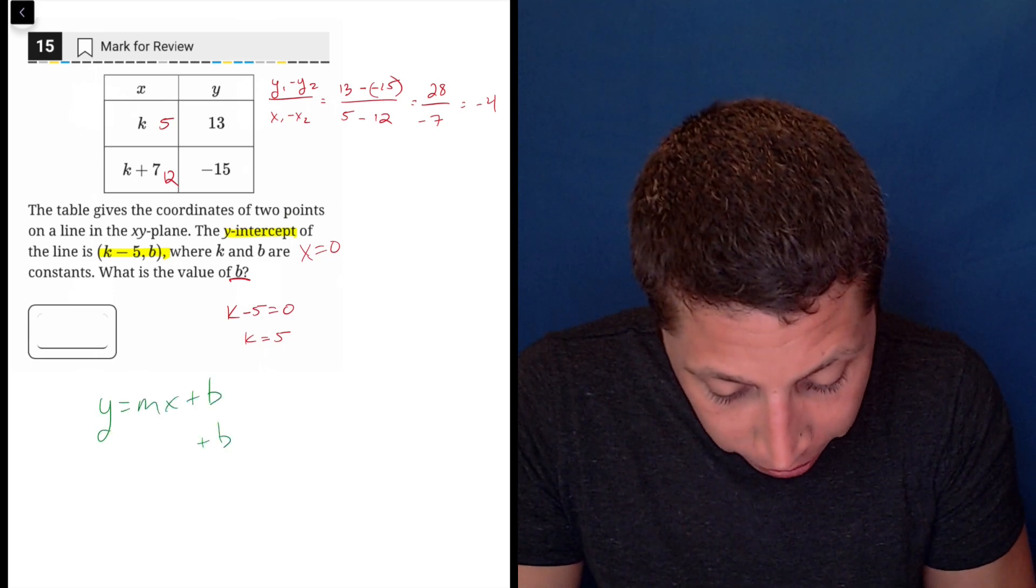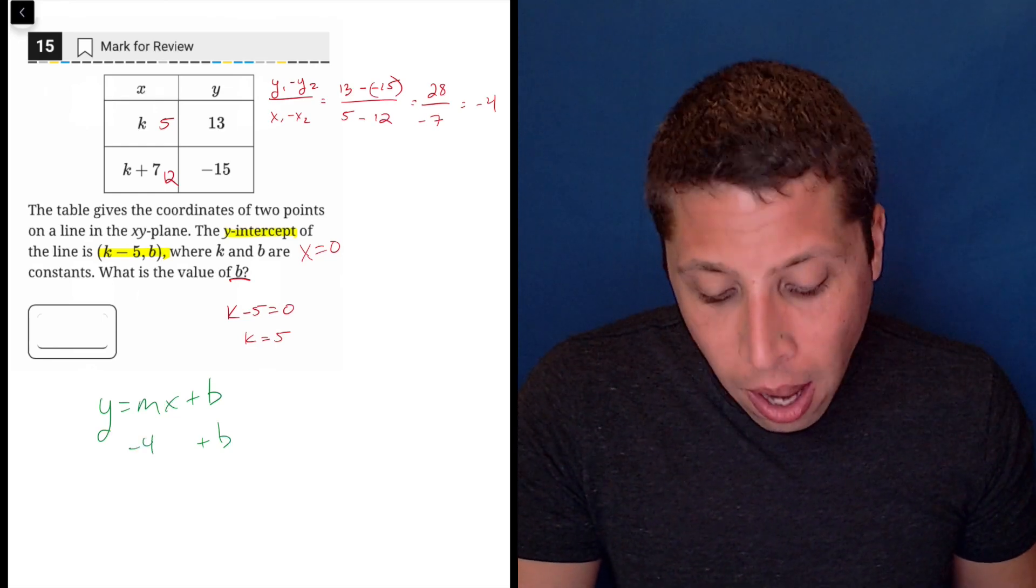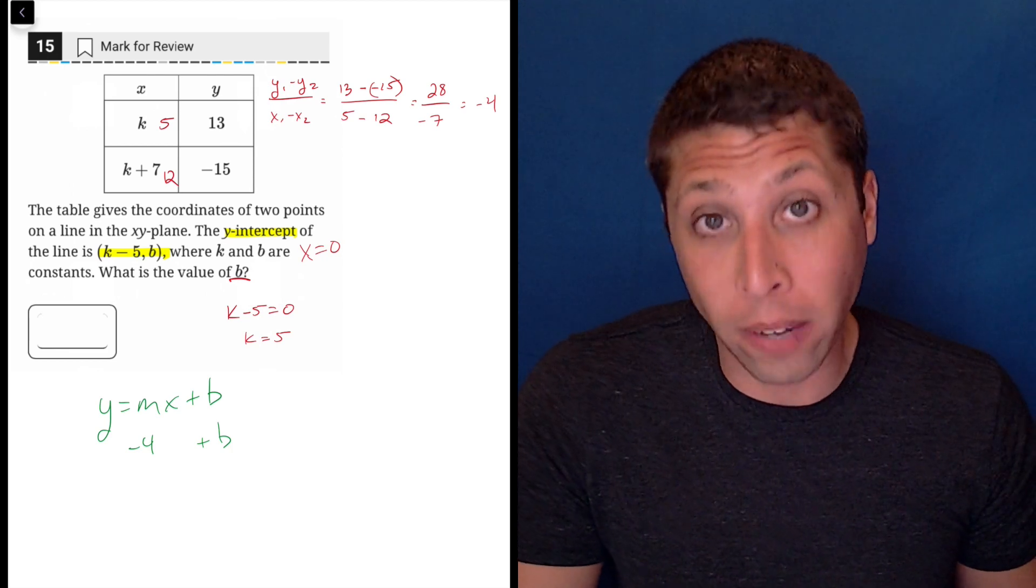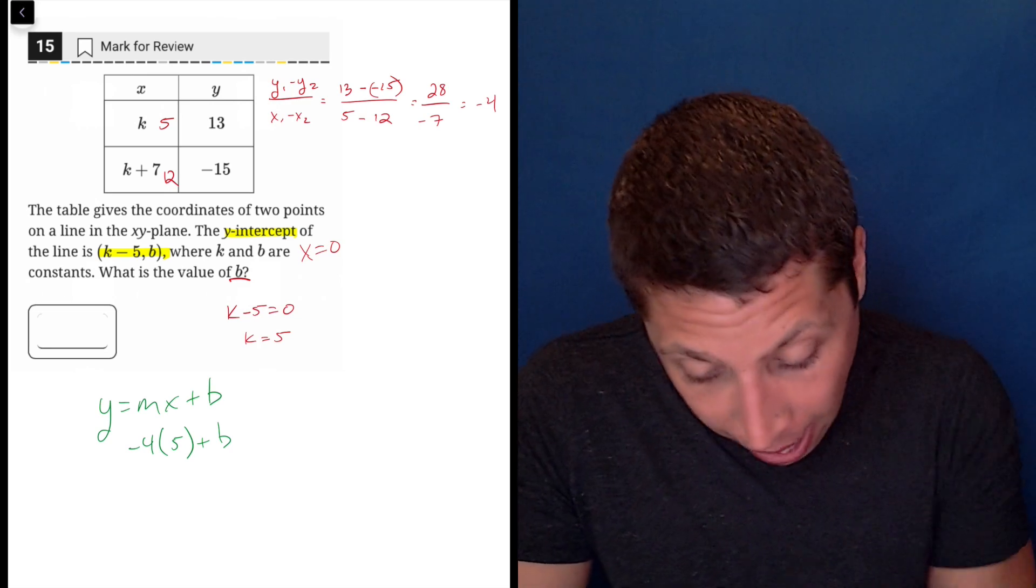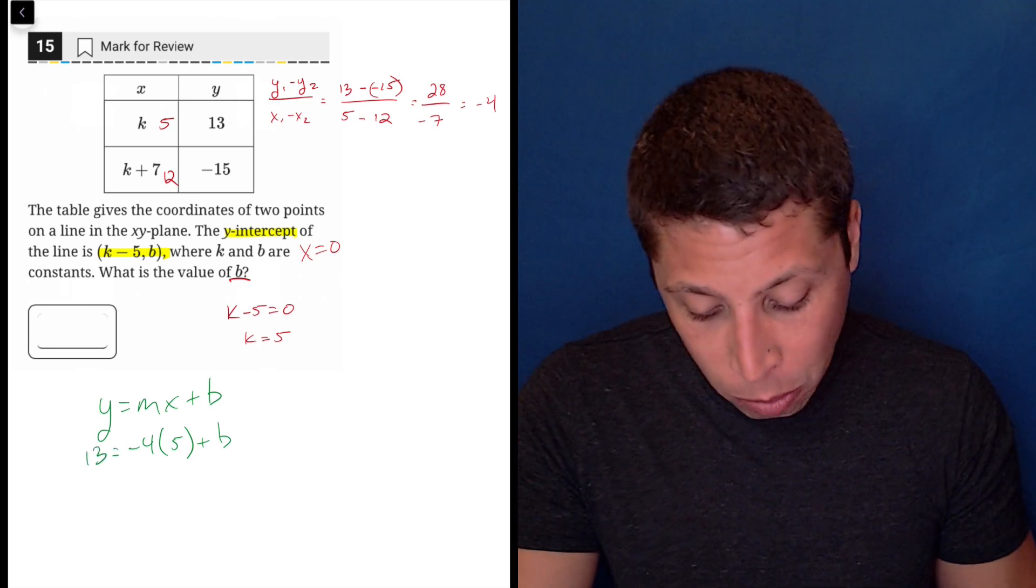I still don't know the b, that's what I'm going to have to solve for. I just found the m is negative 4, so how am I going to solve for the b, the y-intercept? Well at this point what I would do is just plug one of the points into the equation and I would just pick the easier one here. So the x would be 5 and the y is 13. And now I have an equation with just one variable which means I can solve.